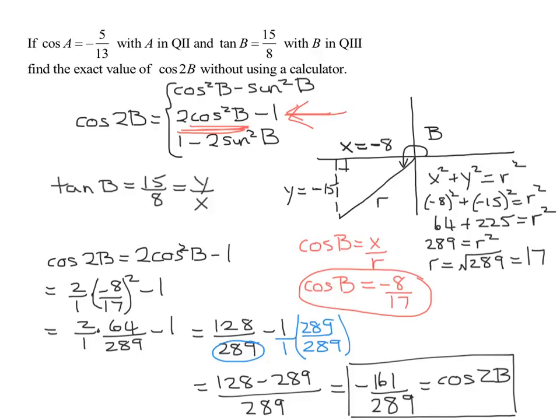One thing you could do to check to see if this is a reasonable answer here. Remember, the sine and the cosine of any angle has to lie between negative 1 and positive 1. If you put this number here in your calculator, you're going to get negative 0 point something. So does this number lie between negative 1 and positive 1? Yes. So that's a nice little check you can do at the end.